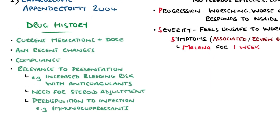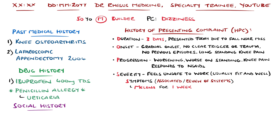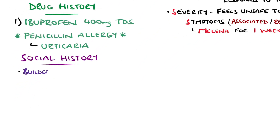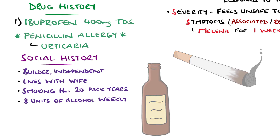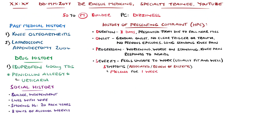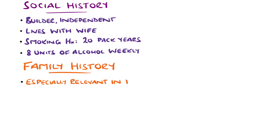This also tends to be a good place to explore the presence of any drug or other allergies, including what reaction they get. Next is the social history, which we've somewhat covered with the occupation, but includes general level of functioning and carers if any, as well as who they live with. Smoking, taken in pack years, alcohol and illicit substance use should also be explored here. Travel history and sexual history may also be relevant. Family history is particularly relevant in younger patients, but can also be useful in older patients — for example, presence of cardiac events in family members under 50 suggests genetic involvement.